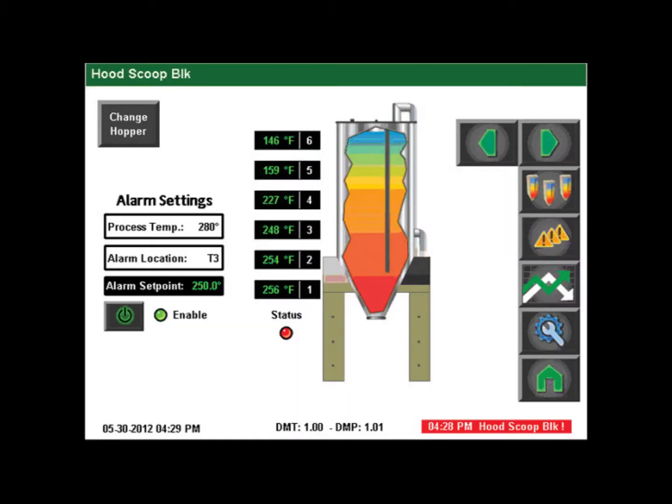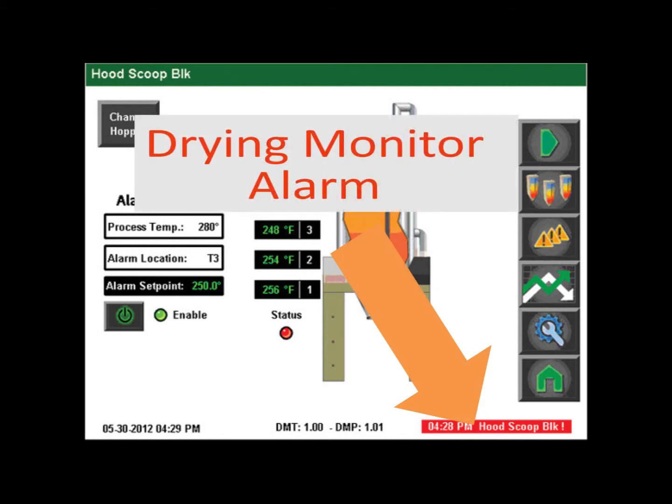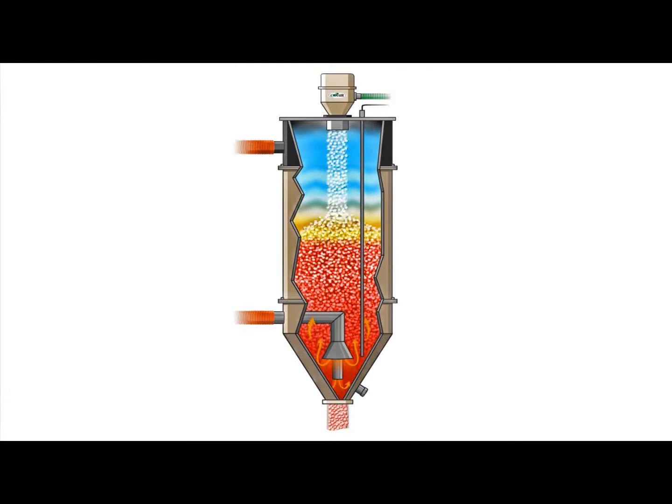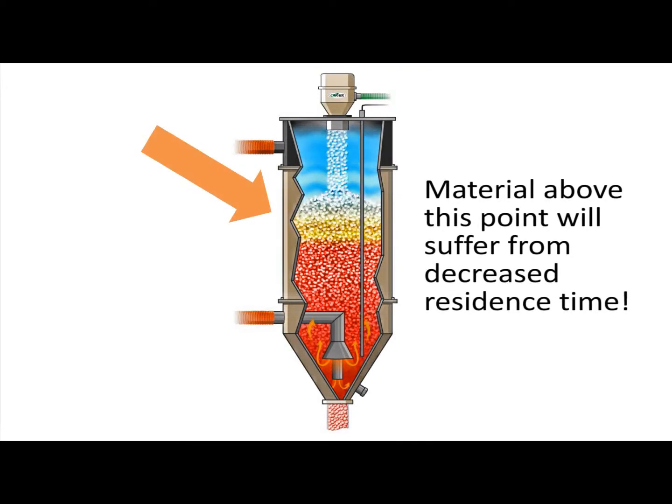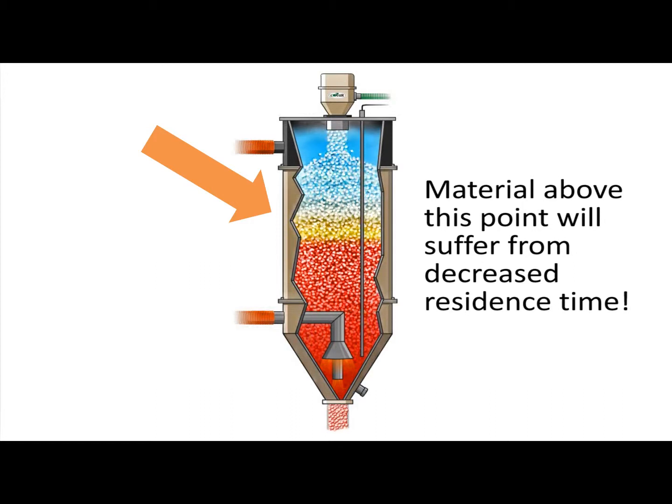So who would know? Well, the drying monitor would, and it would see and record that gap as an interruption to the temperature profile in the upper region of the hopper and faithfully report it, signaling you that the drying system will soon be putting out insufficiently dried material.